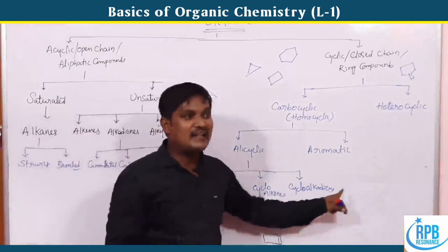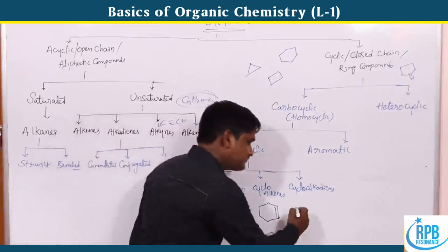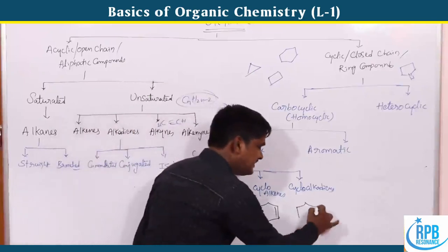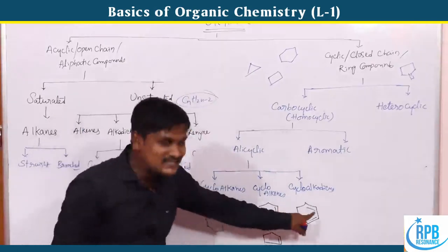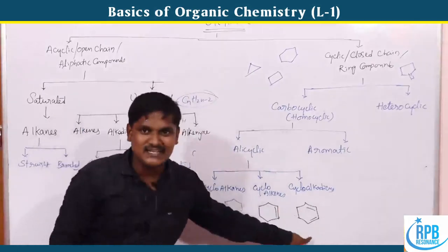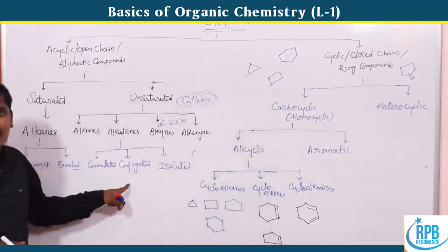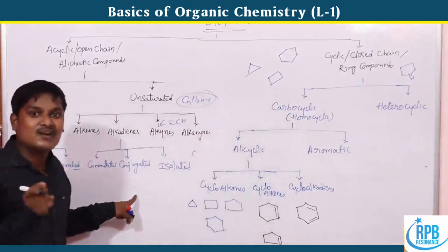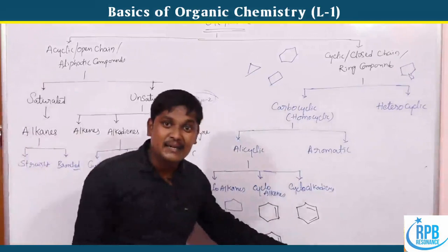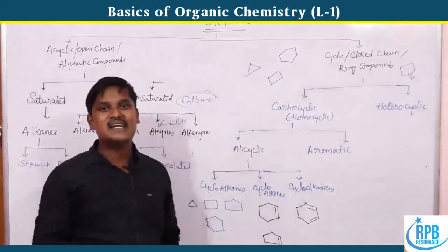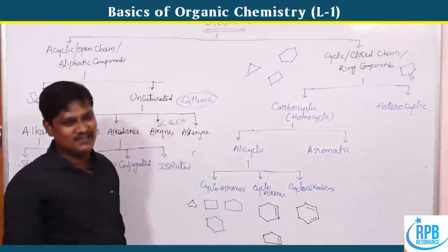Cycloalkadienes have two double bonds that are alternating — this is a conjugated system, but in a cyclic form. So a cyclic conjugated system is a cycloalkadiene.